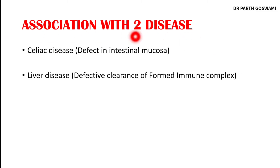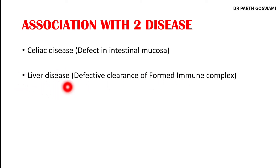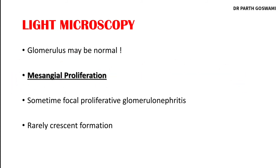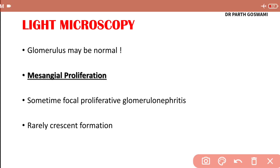IgA nephropathy can be associated with two diseases: celiac disease and liver disease. In celiac disease, there is a defect in the intestinal mucosa. In liver disease, there is defective clearance of immune complexes — normally, immune complexes formed in the blood are cleared by the liver, but here clearance is defective.